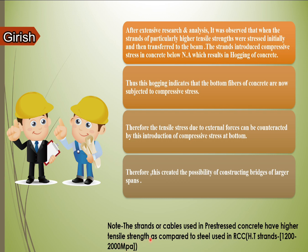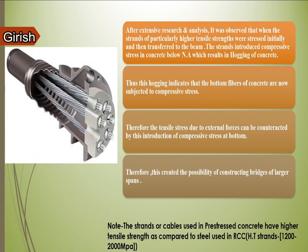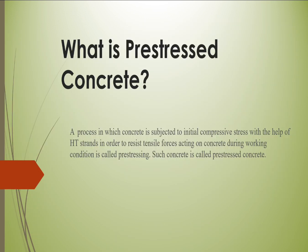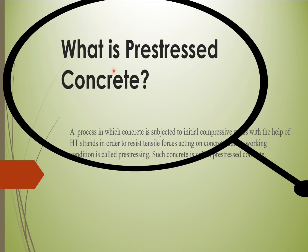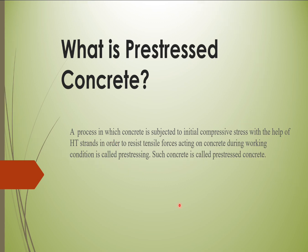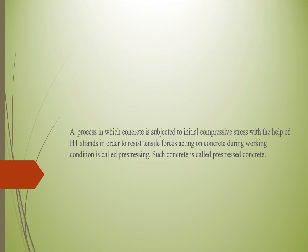Please note: the strands or cables used in pre-stressed concrete have higher tensile strength compared to steel used in RCC — the strands may range from 1200 to 2000 MPa. This figure shows the strands along with the anchor plate, bearing plate, and guided trumpet. Pre-stressed concrete can be defined as a process in which concrete is subjected to initial compressive stress with the help of high-tensioned strands, in order to resist tensile forces acting on concrete during working conditions.